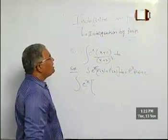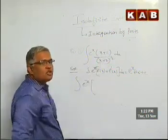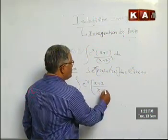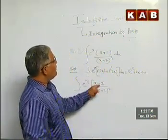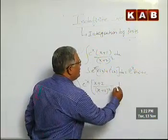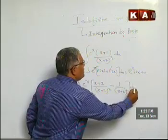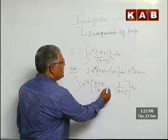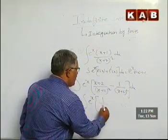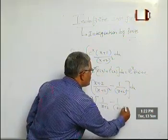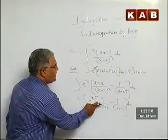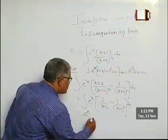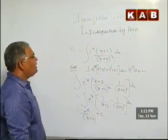One thing is clear: x+1 is in the numerator and x+2 is in the denominator. Preferably we want x+2 in the numerator too. So we write (x+2)/(x+2)² — but x+2 is not available, x+1 is. So we write x+1 = (x+2) − 1, giving 1/(x+2) − 1/(x+2)². So this is eˣ·[1/(x+2) − 1/(x+2)²] dx, where f(x) = 1/(x+2) and f'(x) = −1/(x+2)². Therefore the answer is eˣ/(x+2) + c.